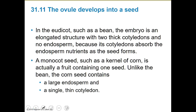In eudicots like a bean, the embryo is an elongated structure with two cotyledons and no endosperm because the cotyledons absorb the endosperm as the seed forms. In monocots, that one cotyledon — like a kernel of corn — the fruit contains one seed. Unlike the bean, the corn seed contains a large endosperm and a single thin cotyledon. These are differences we can add to the eudicot and monocot comparison.